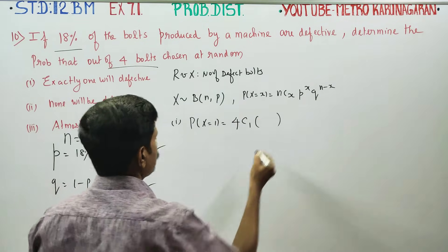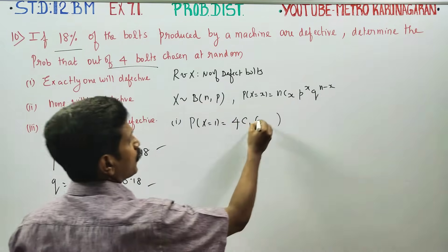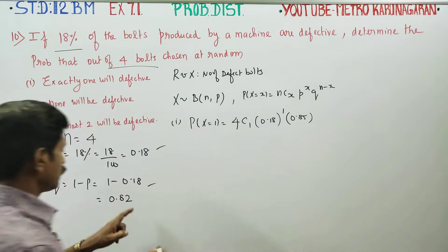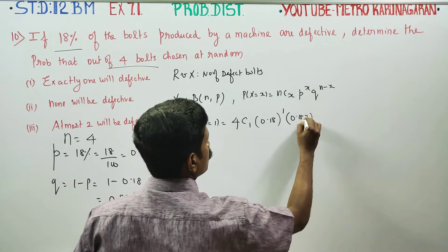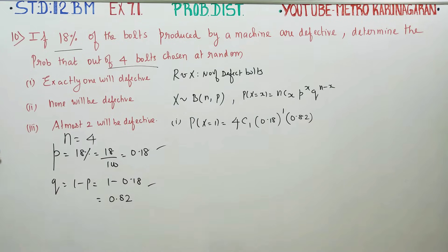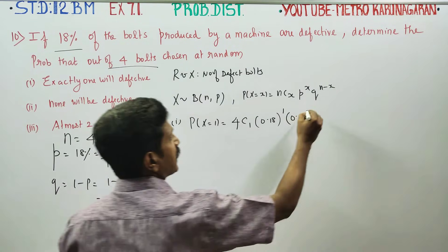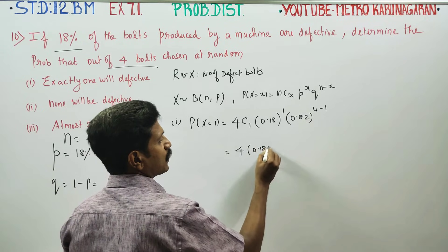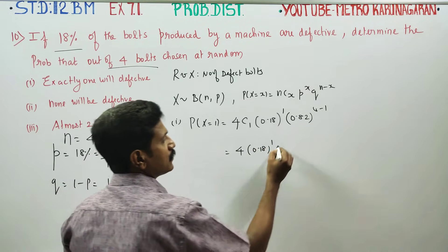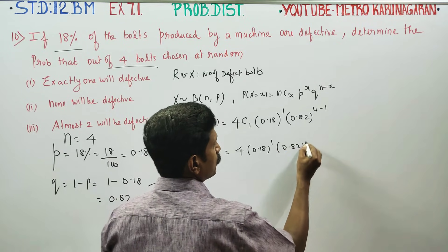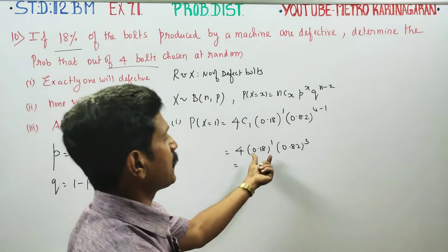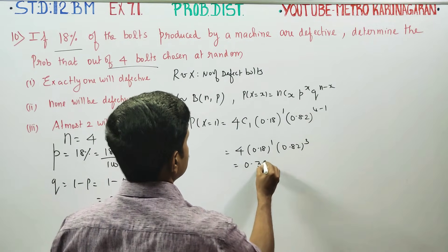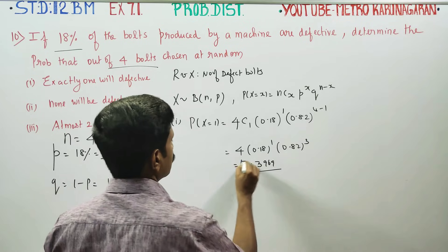First question: exactly one will be defective. P(X = 1) = 4C1 · (0.18)^1 · (0.82)^(4−1). 4C1 is 4, (0.18)^1 is 0.18, (0.82)^3. Simplifying, the final result will be 0.3969. This is the answer to the first part.